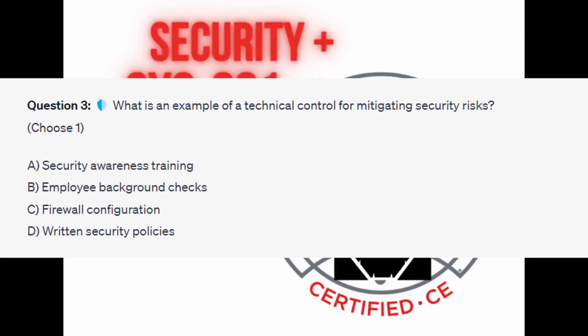Question number three: what is an example of a technical control for mitigating security risks? Choose one. Is it A, security awareness training? Is it B, employee background checks? Is it C, firewall configuration? Or is it D, written security policies?